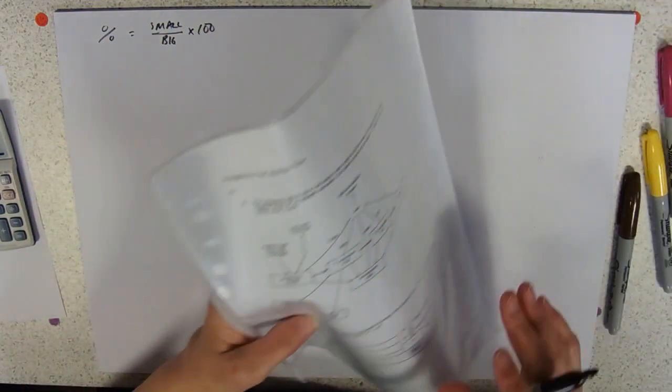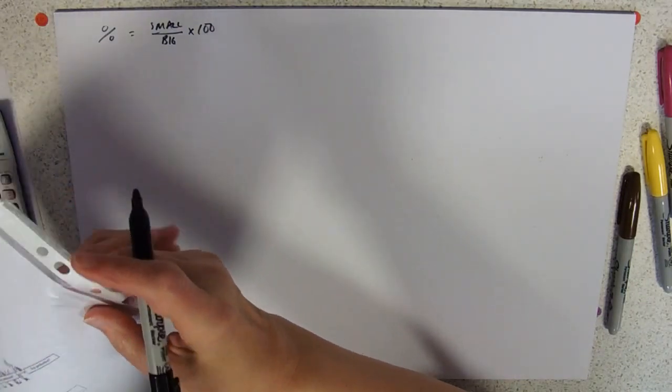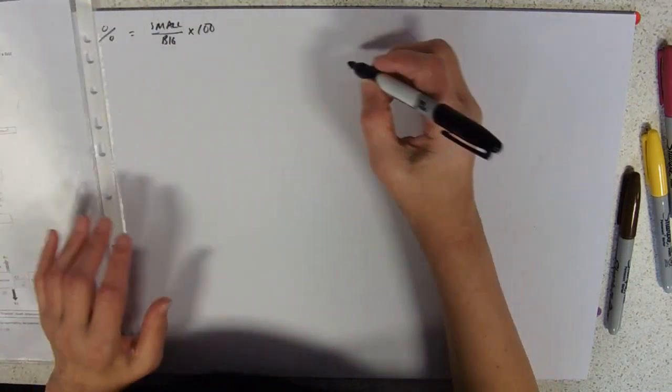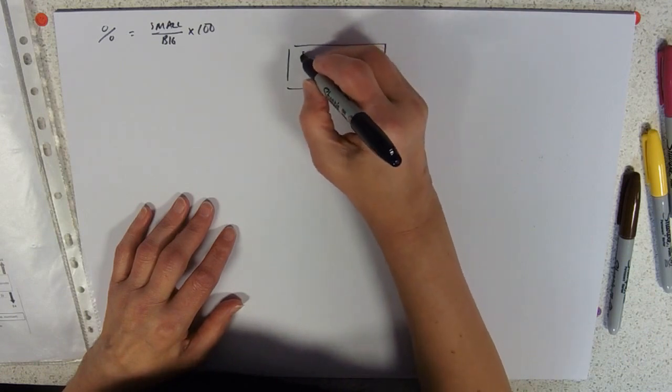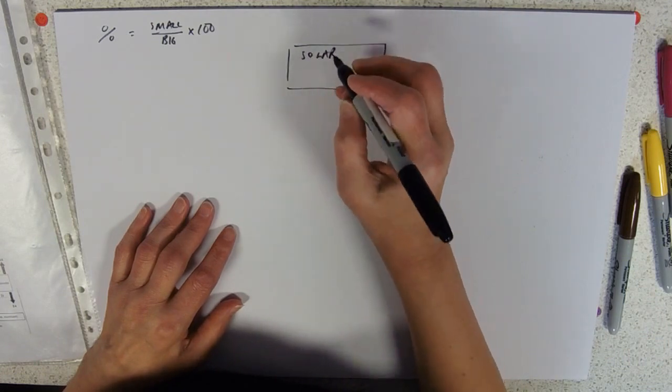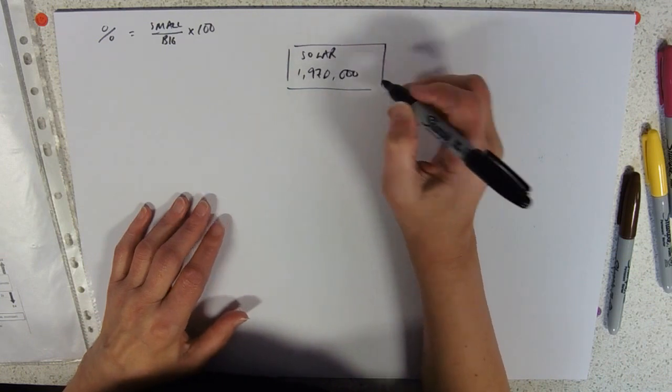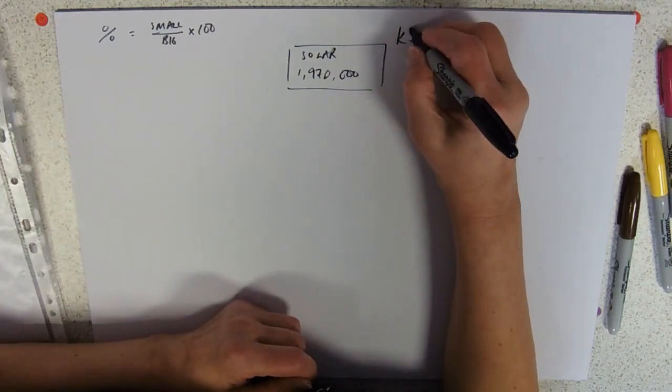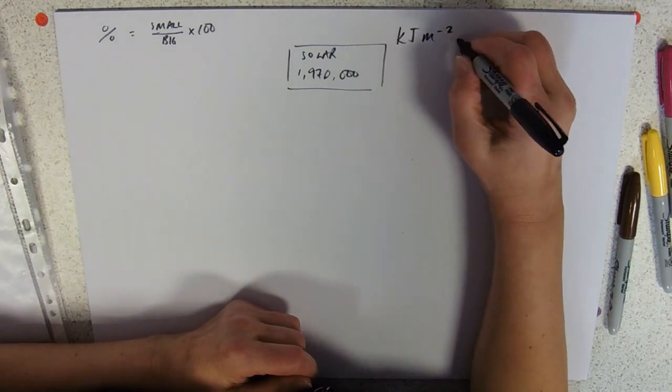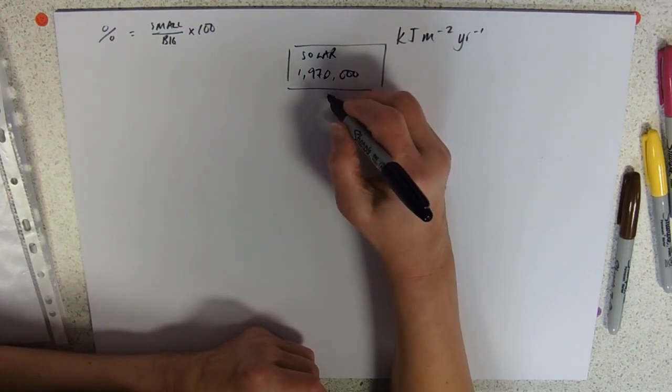So if we look at one of these diagrams here, I'll just do it a bit bigger for you. We've got our solar energy coming in and we're given some values. We've got 1,970,000, so one million nine hundred and seventy thousand, usually units kilojoules per meter squared per year.